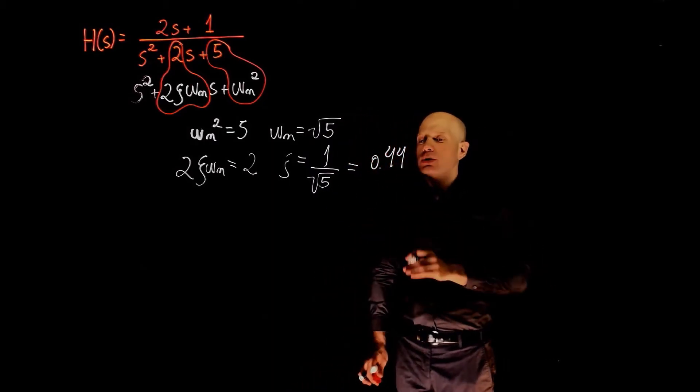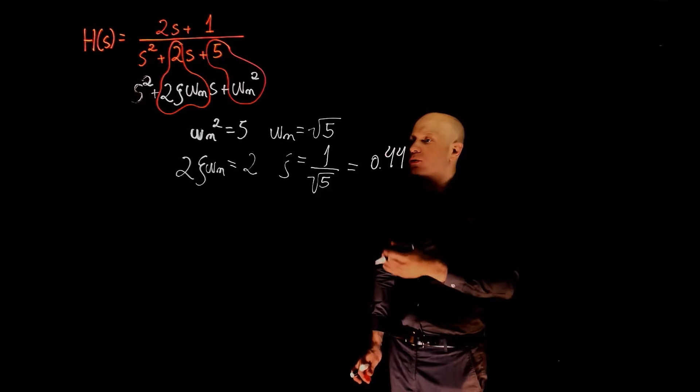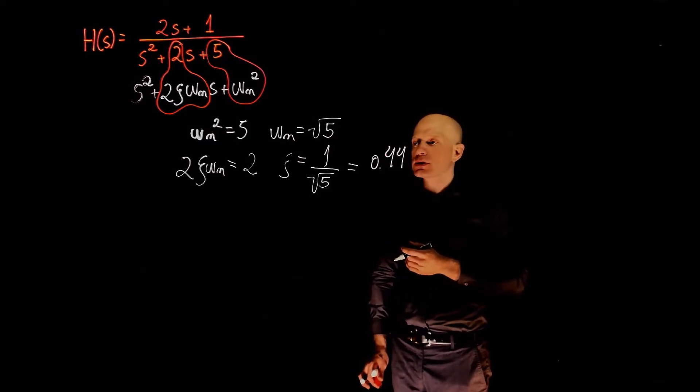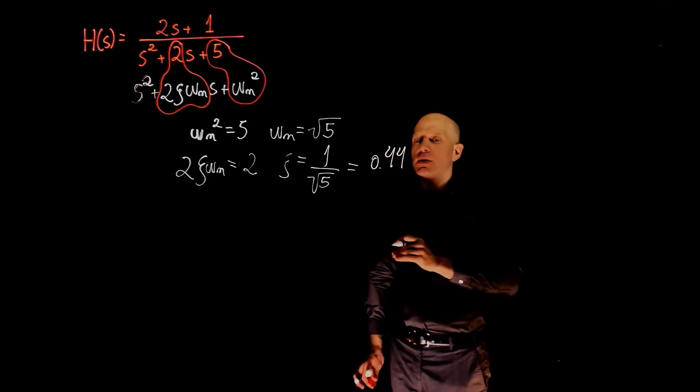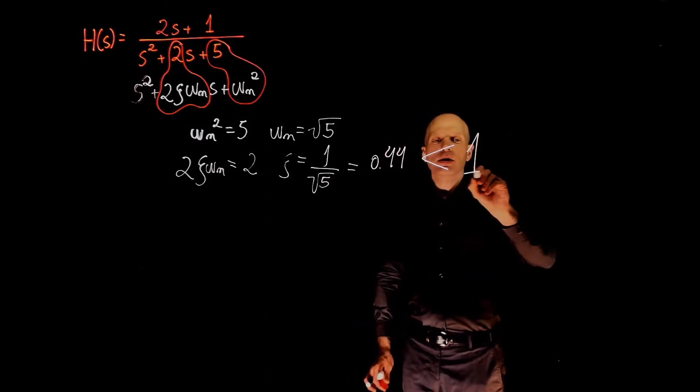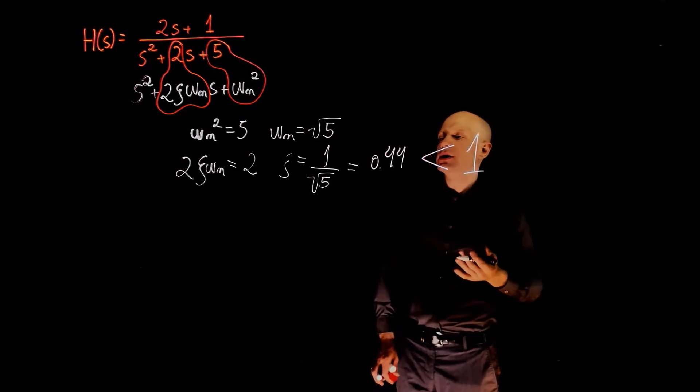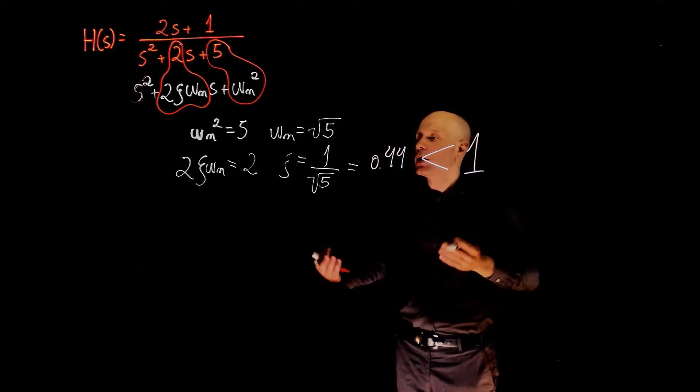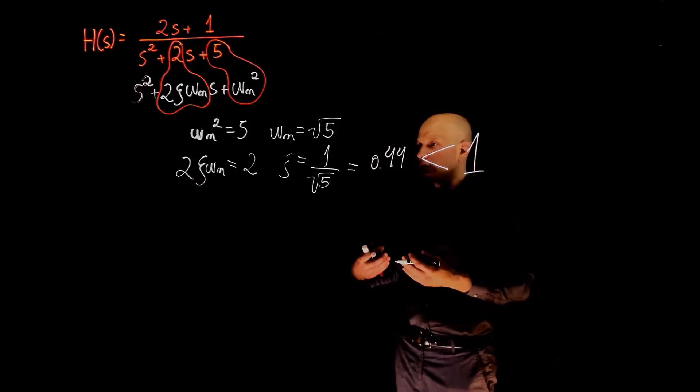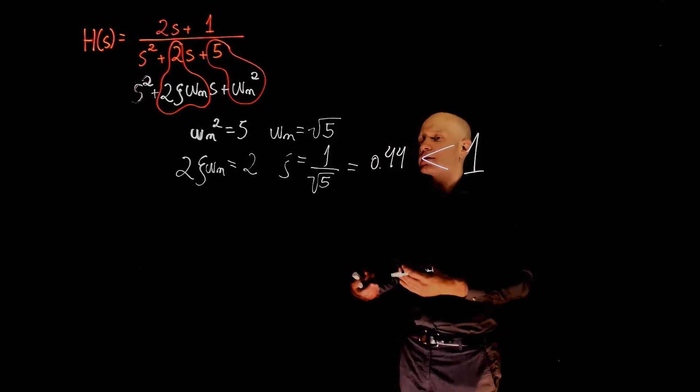By looking at the damping ratio, we can immediately tell that the time response will have both sinusoidal and exponential components. This is because this system is underdamped. The damping ratio is less than 1 and greater than 0. This characterizes an underdamped system, which means that the time response will have both exponential and sinusoidal components.